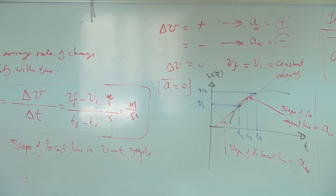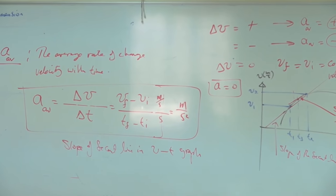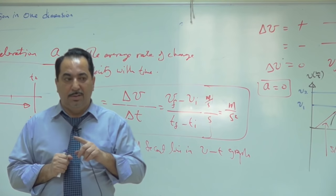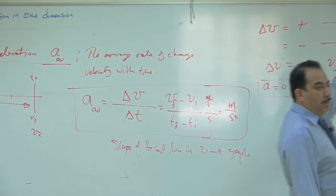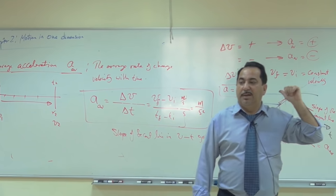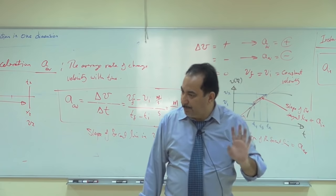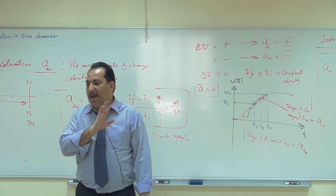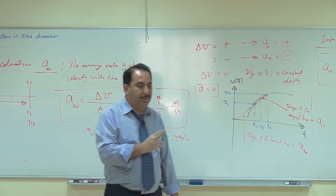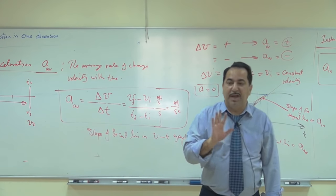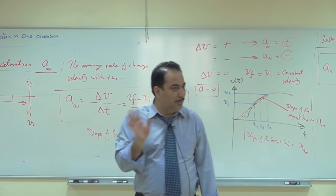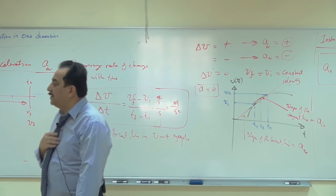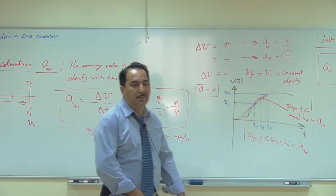One more important point: acceleration sign doesn't necessarily match velocity sign. Acceleration positive means acceleration direction is to the right; acceleration negative means to the left. But that doesn't mean velocity is to the right or left — the acceleration direction is independent of the velocity direction. We'll come to that in detail next time.